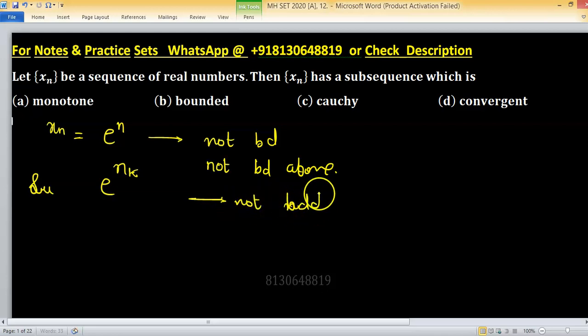So not bounded means not convergent, because every convergent sequence is bounded as well as cauchy. This is true in the real case: every convergent sequence is bounded plus cauchy.